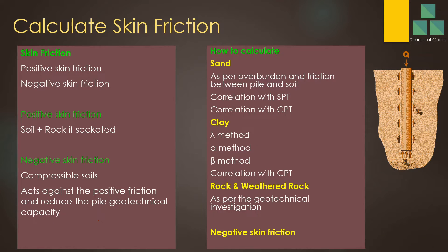Skin friction has two components as discussed: positive and negative. Positive skin friction has two parts — that provided by the soil and that provided by the rock when the pile is socketed into rock. Above the rock, through the various soil layers up to the ground, you can consider positive skin friction. Negative skin friction must also be considered for very weak compressible soils such as peat, which can compress and develop negative skin friction, thereby reducing the pile geotechnical capacity.